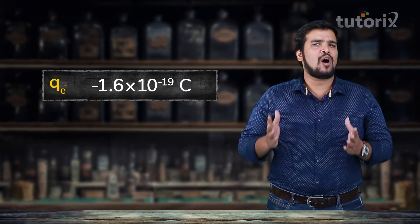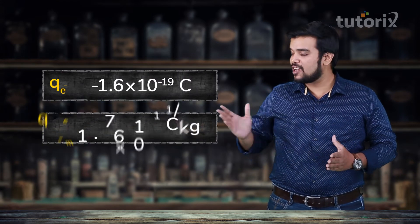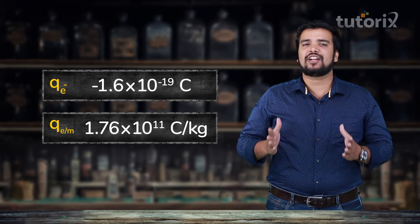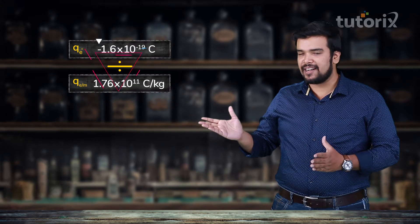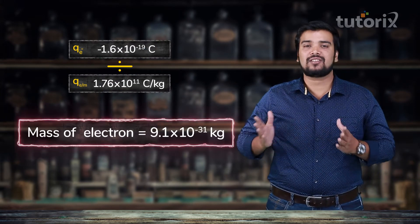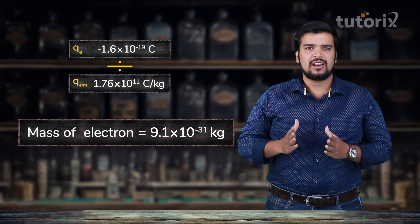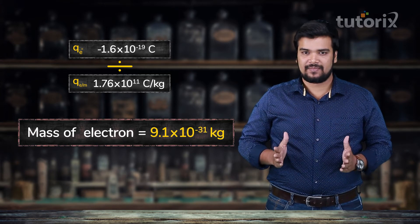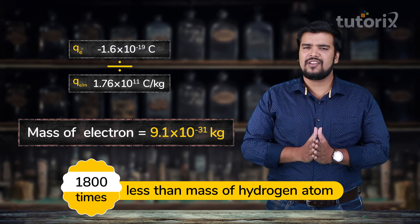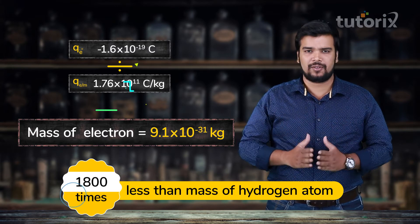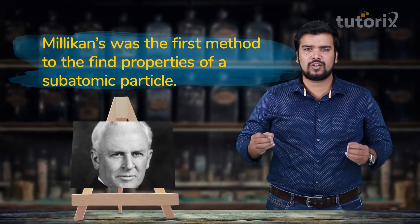Surprisingly, this value was very close to the value found later by more sophisticated instruments. Now, from Millikan's experiment we know the charge of the electron, and from Thomson's experiment we know the charge-to-mass ratio of the electron, so finding the mass of the electron is straightforward — we simply divide them. The mass of the electron came out to be 9.1 × 10⁻³¹ kg, which is around 1800 times less than hydrogen, as established in the last video.